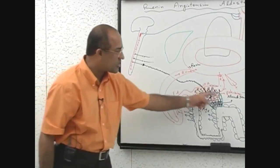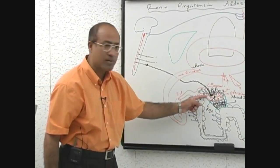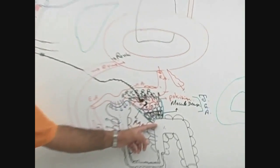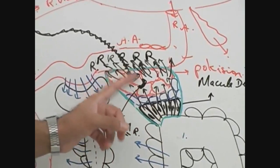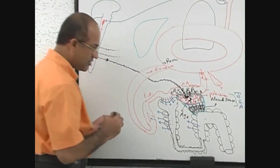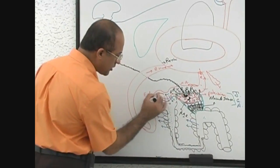We see this juxtaglomerular apparatus can measure the pressure directly, can measure the sodium concentration directly, and in every emergency, whenever sympathetic nervous system will fire, renin will come. Now what will this renin do?